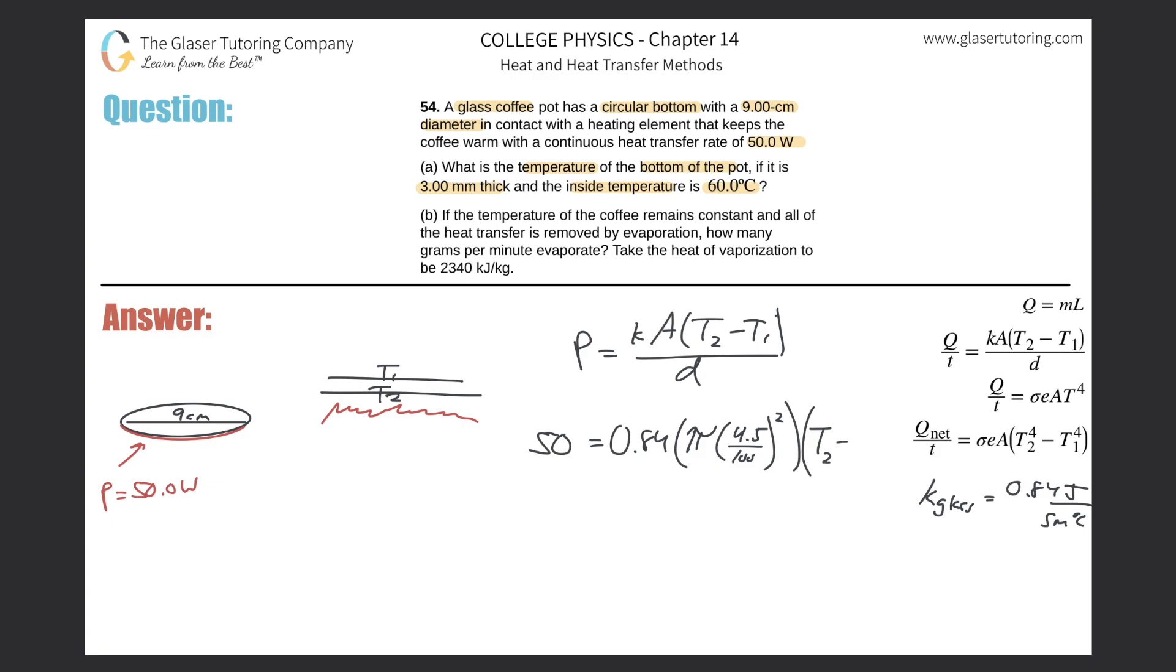Then multiplied by this change in temperature. So this is T2, that's what we're trying to find. T1, it says the inside is going to be 60 degrees Celsius, so I'll plug in my 60 there. And then divide this by the thickness. They told us the thickness here was going to be 3 millimeters, but we need that in meters, so divide that by 1,000.